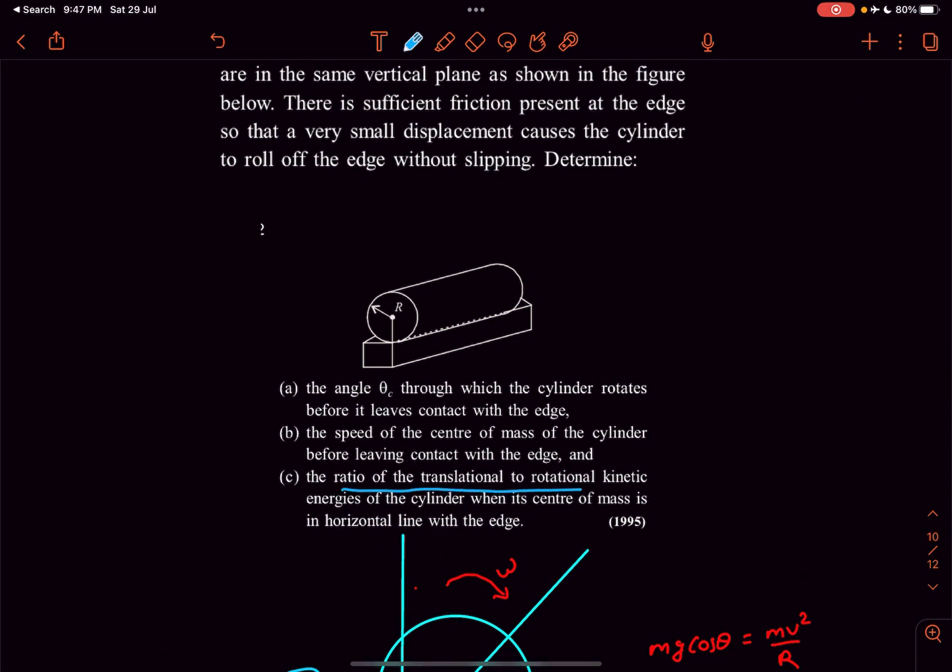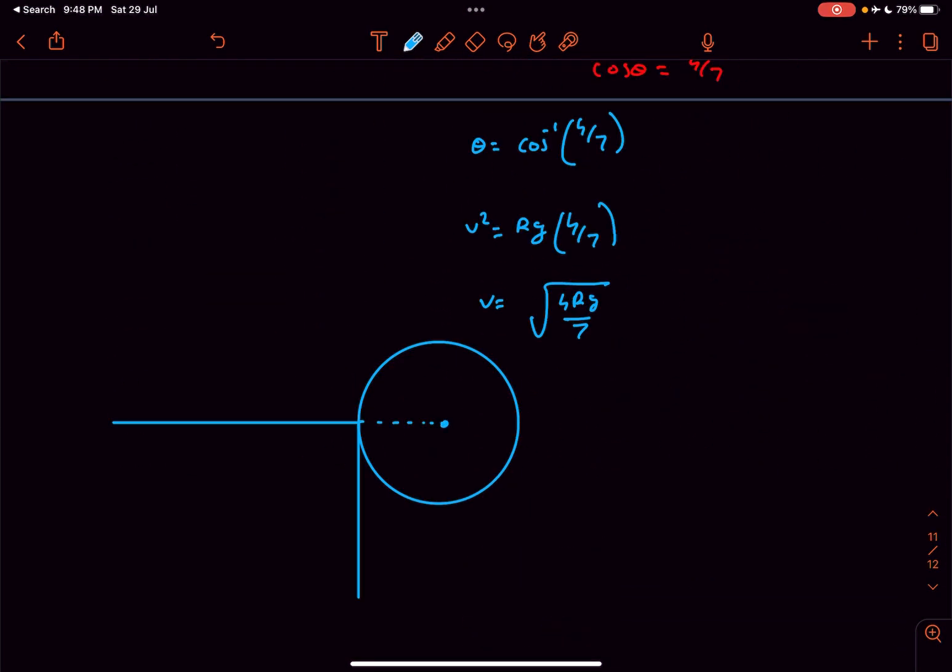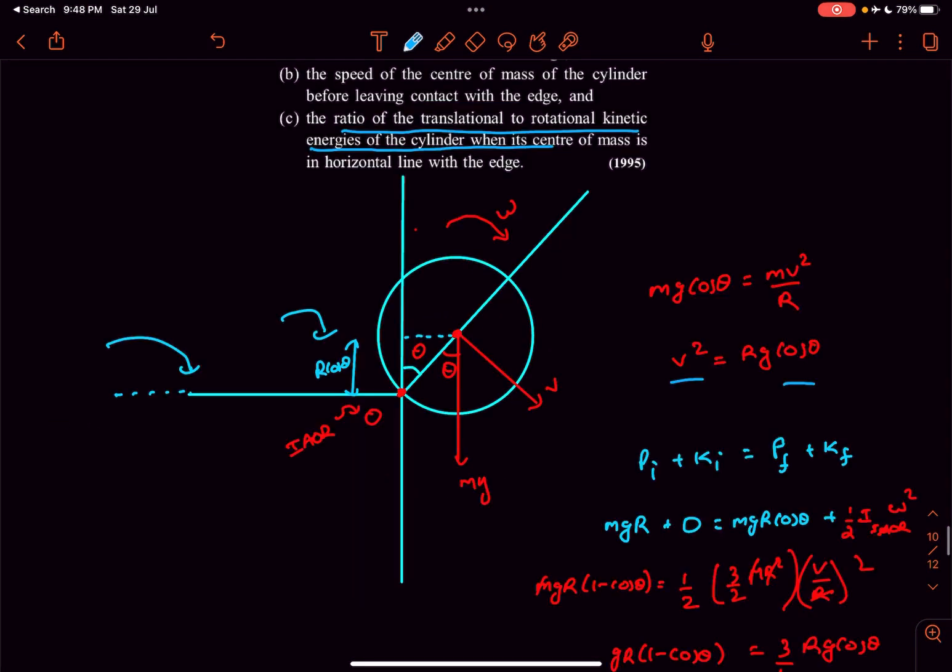Now we have to determine the ratio of translational to rotational kinetic energy of the cylinder when the center of mass is horizontal. Now they are talking about this case in which the center of mass becomes in line with this horizontal line. After this cylinder has left the contact with this surface it clearly has no torque about the center of mass which means the omega of the cylinder will not change. It will remain constant.